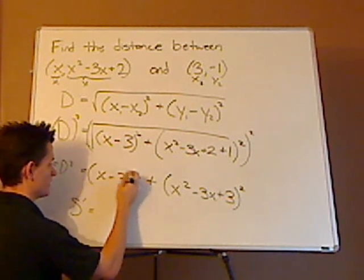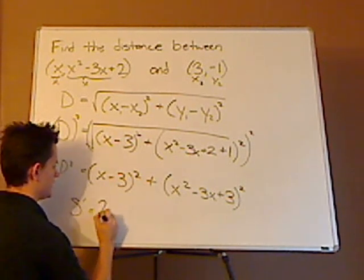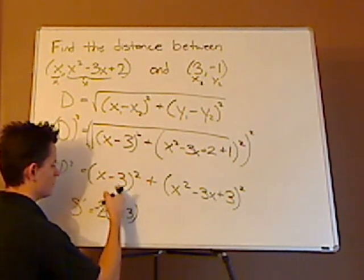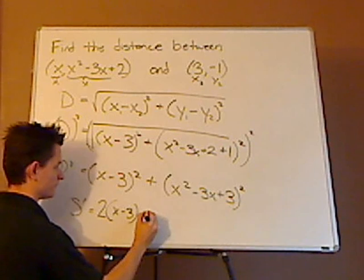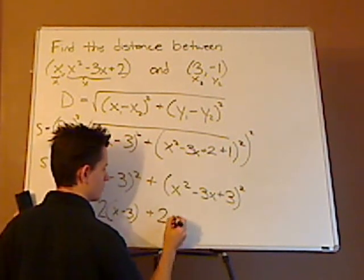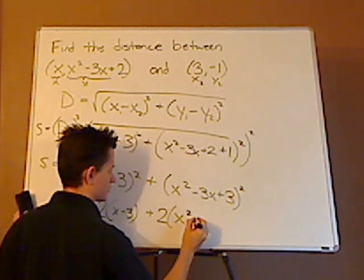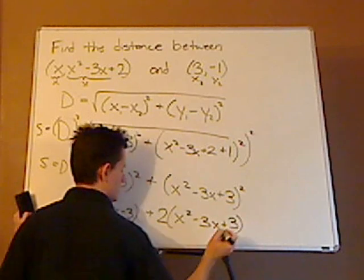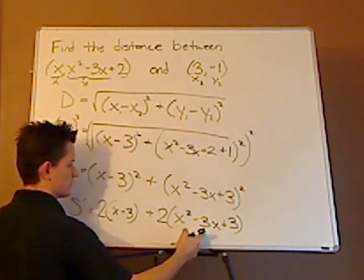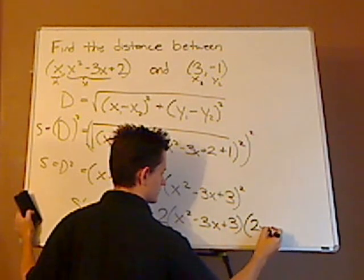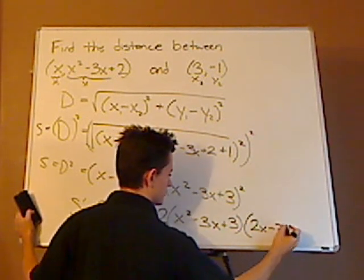The derivative of the outside and I keep the inside the same minus the derivative of the inside, which is just going to be 1. I do the same thing here. Take the derivative of the outside, x squared with 2 in front, and then I take the derivative of the inside. The inside is going to be 2x minus 3.